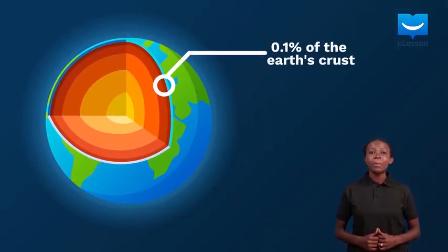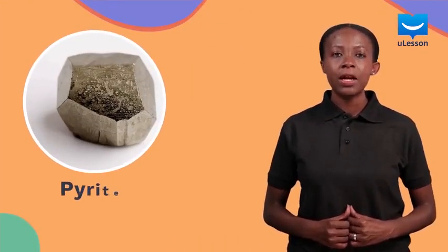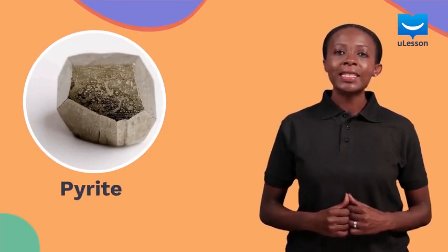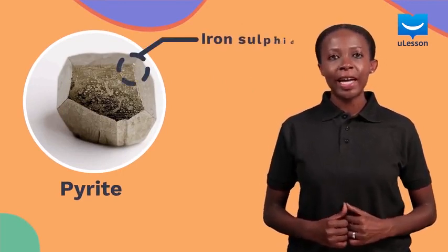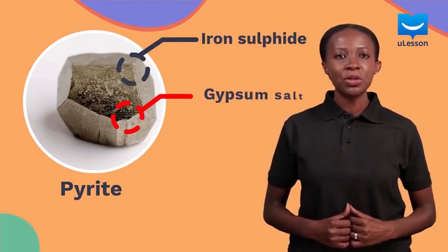In its combined state, sulfur occurs naturally in mineral deposits like pyrite, which contains iron sulfide and gypsum salts.